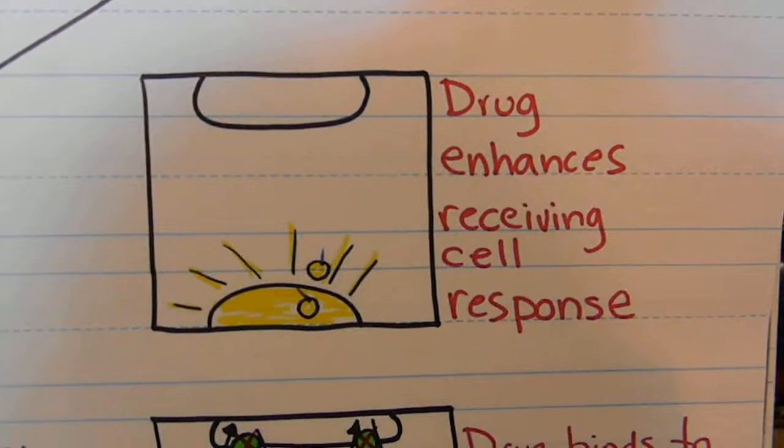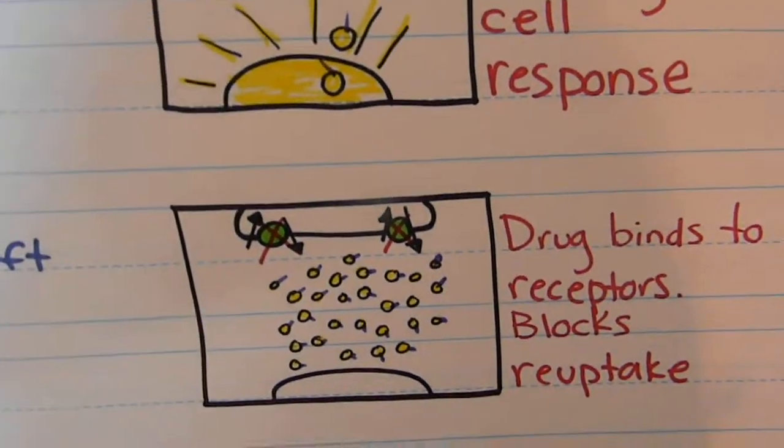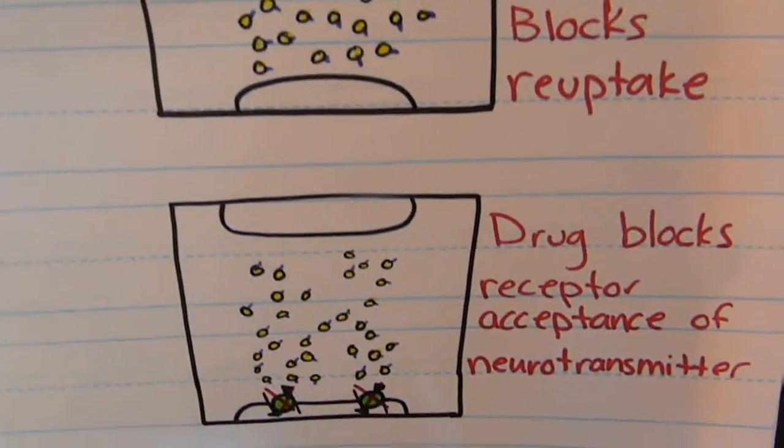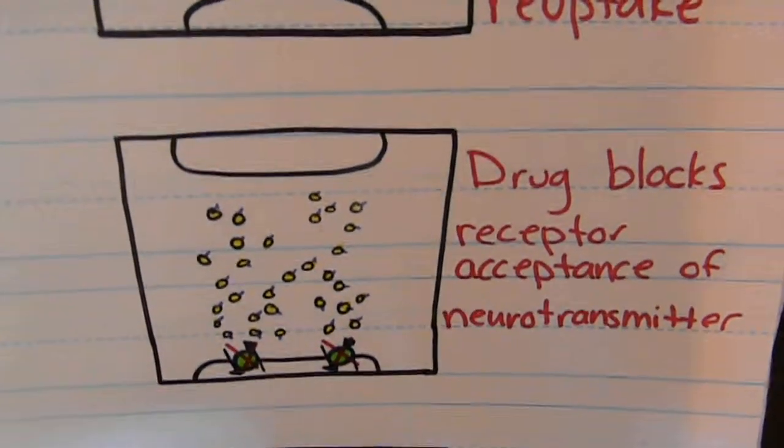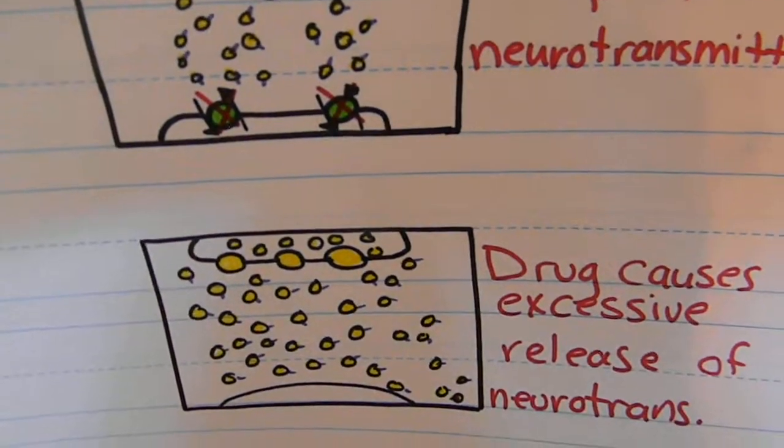They can enhance the receiving cell response. They can bind to receptors to block reuptake. The drug can block the receptor acceptance of the neurotransmitter. And the drug can cause excessive release of neurotransmitters.